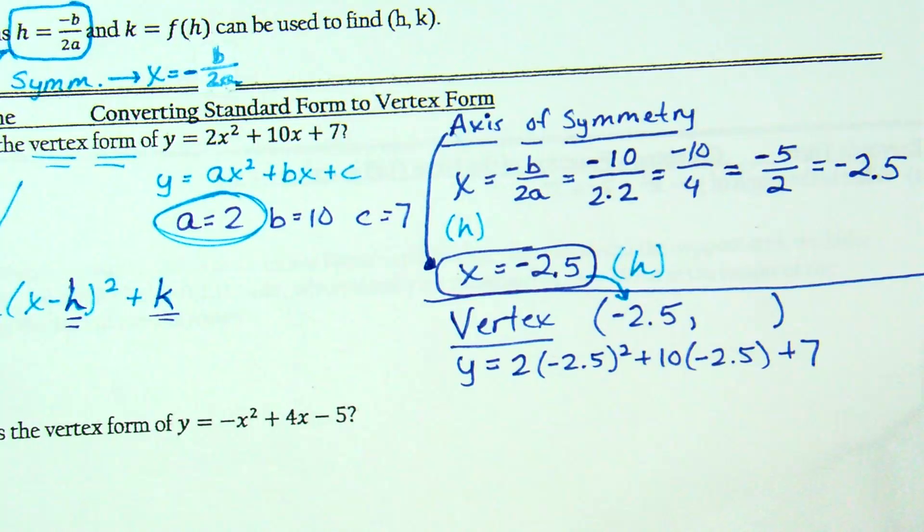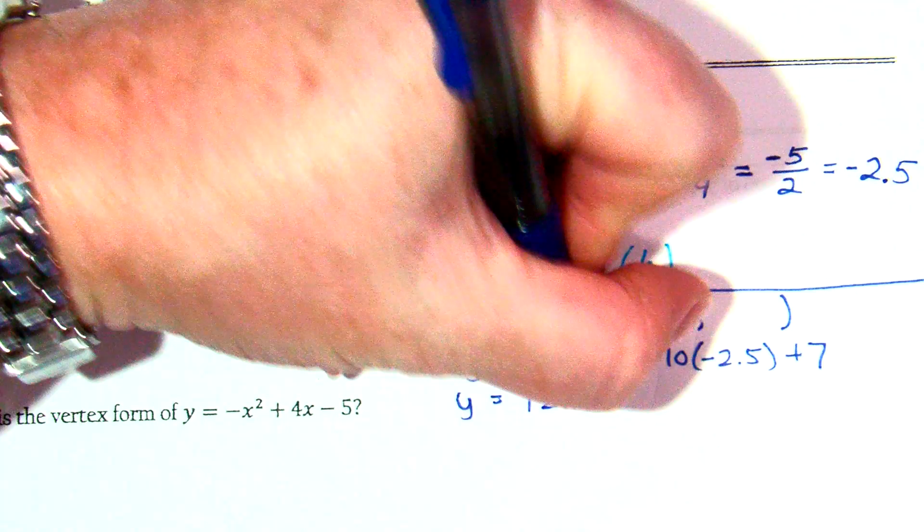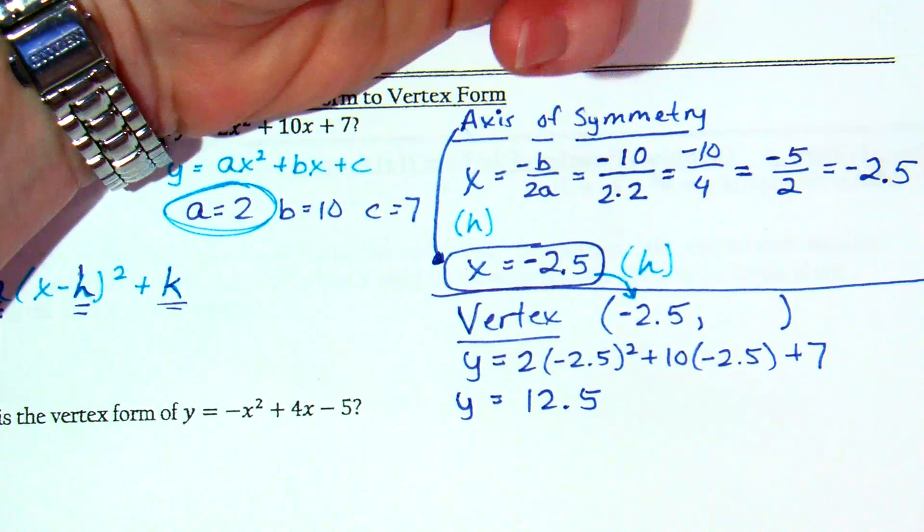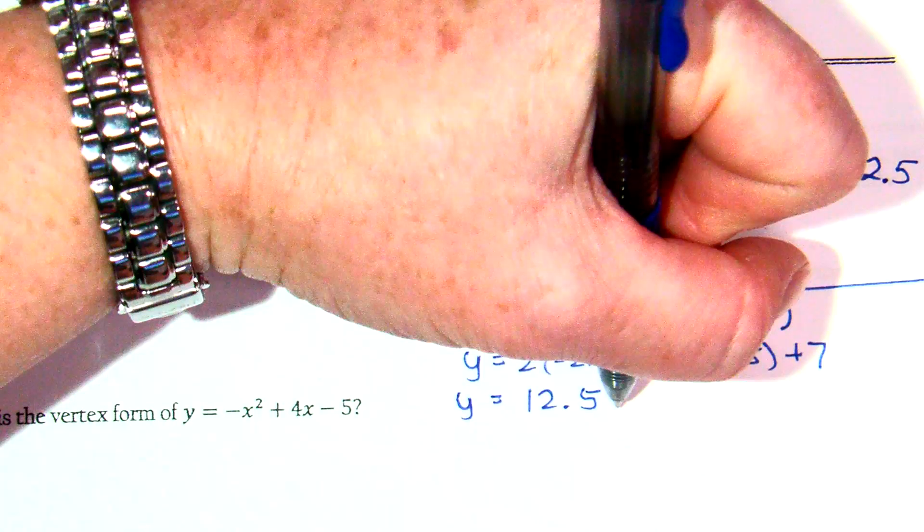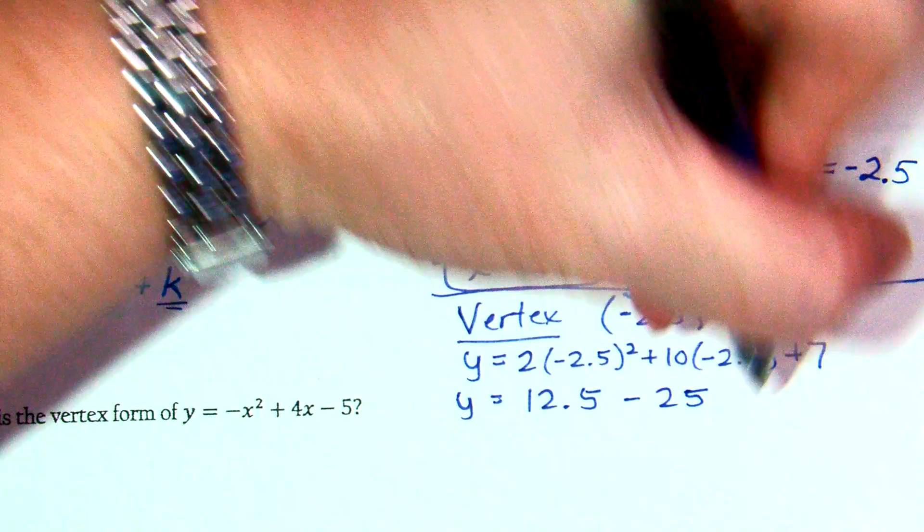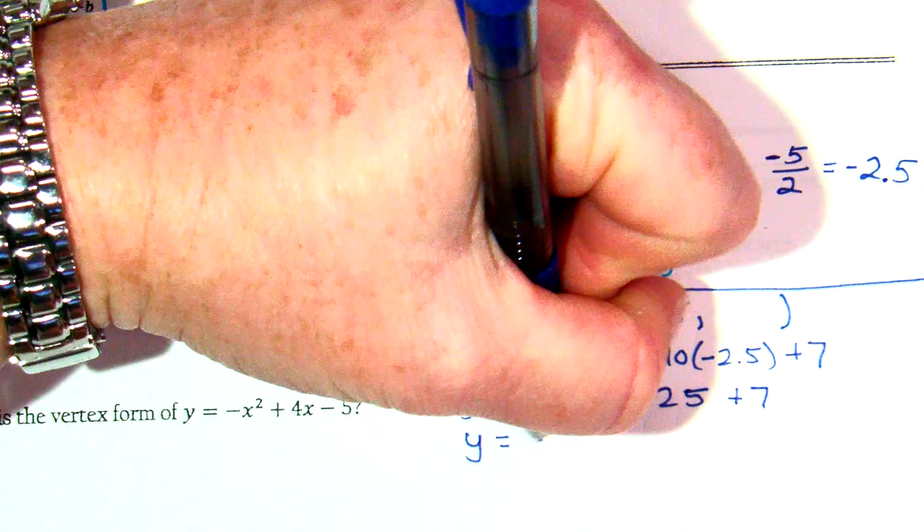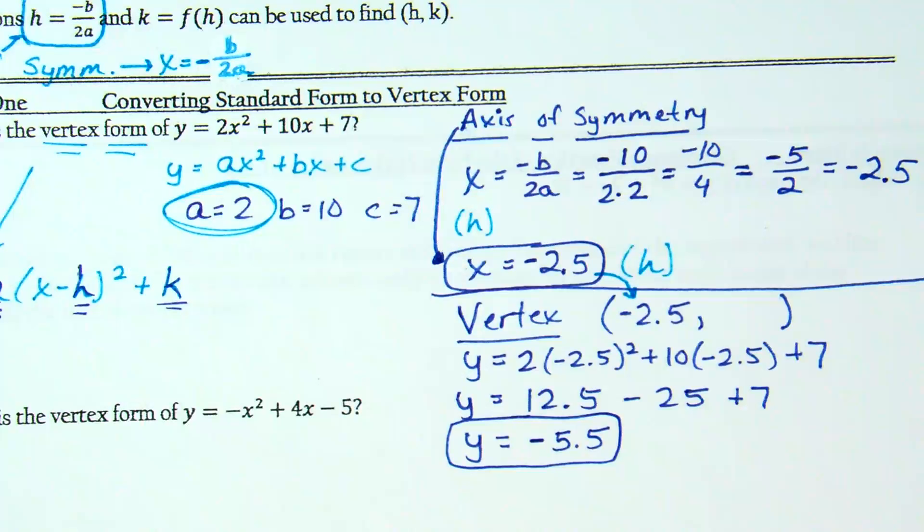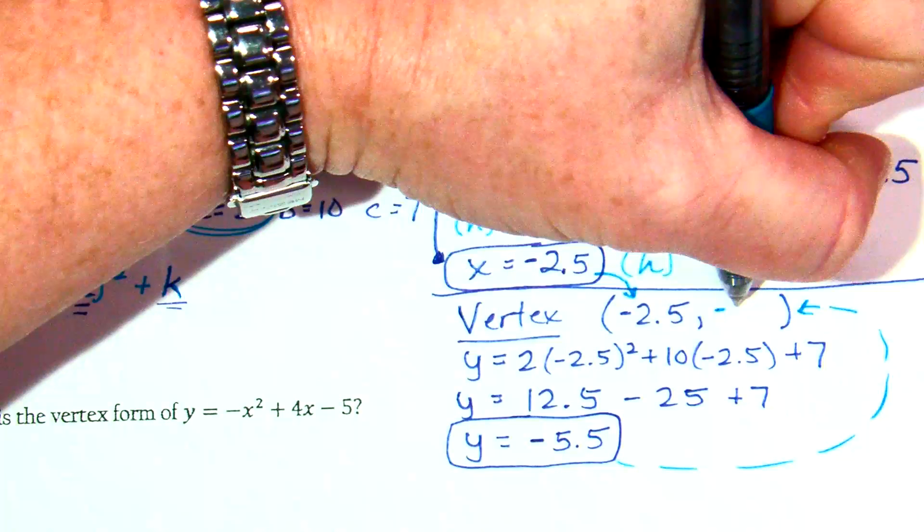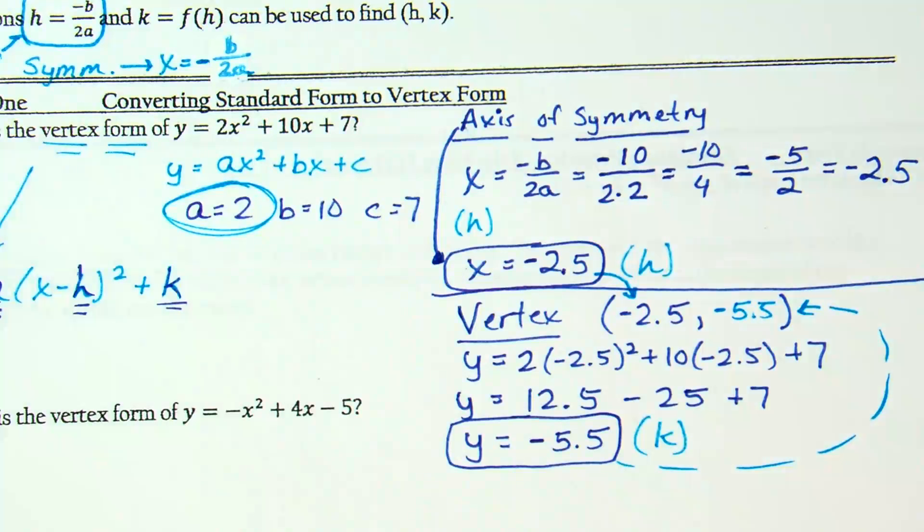Calculator tip of the day. 6.25 times 2 is 12.5. 10 times negative 2.5 is minus 25, and then we still have plus 7. So 12.5 minus 25 plus 7 equals negative 5.5. What is this negative 5.5 value? It's the y, so it is the second half of the vertex and also the k value.